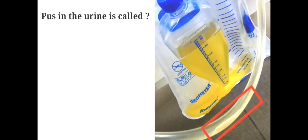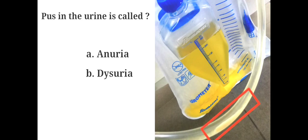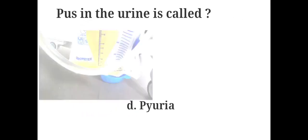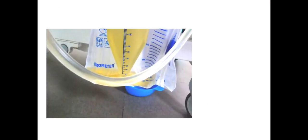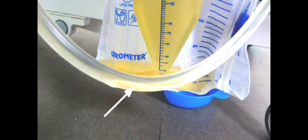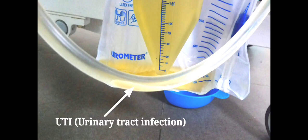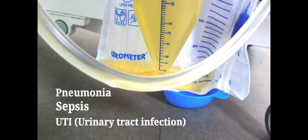Pus in the urine is called: A. Enuria, B. Dysuria, C. Oliguria, D. Pyuria. The answer is D. Pyuria. Pyuria is the condition that occurs when excess white blood cells or pus is present in the urine. Cloudy urine in pyuria frequently indicates the presence of urinary tract infection. It may also indicate sepsis or pneumonia in older adults. Haze test is the test for: A. Albumin, B. Acetone, C. Bile salts, D. Bile pigments. The answer is C. Bile salts.